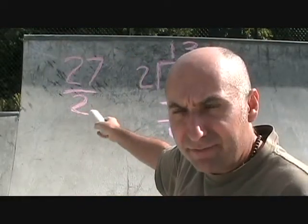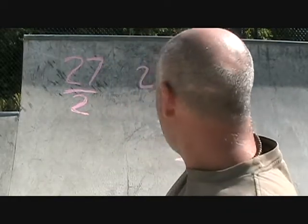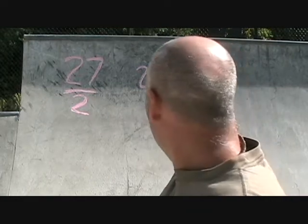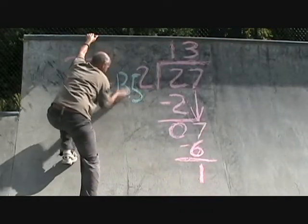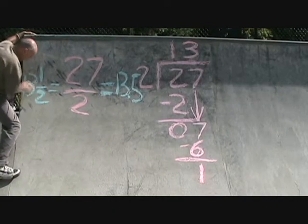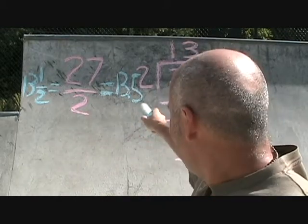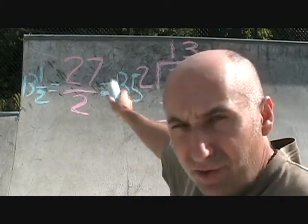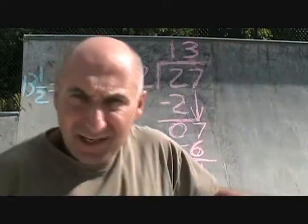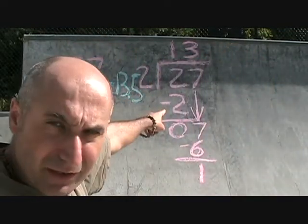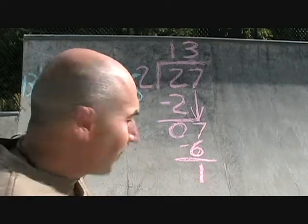Now, 27 divided by 2, you can write multiple ways. You could say 27 divided by 2 is equal to 13.5, or 13 and a half. So what we got, you could write down 27 divided by 2 as 13.5, or you could write down 27 divided by 2 as 13 and a half.